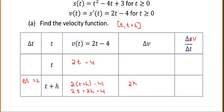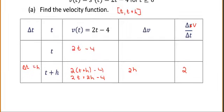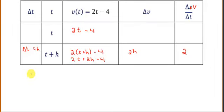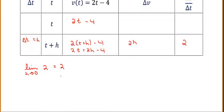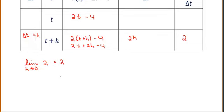If we calculate the change in velocity divided by the change in time, we simply get 2. This is known as the average acceleration. To find the instantaneous acceleration, we take the limit as h approaches 0 of 2, which of course is 2.